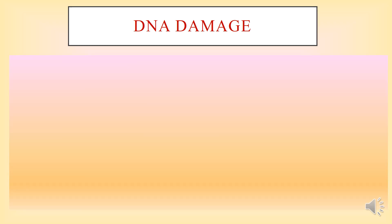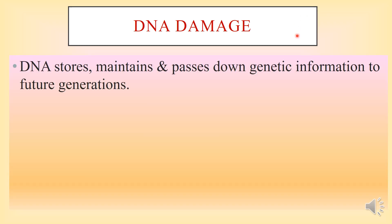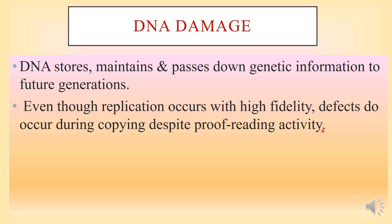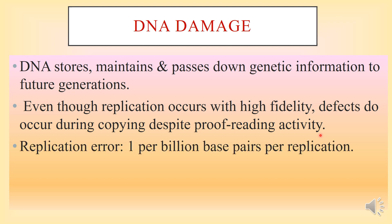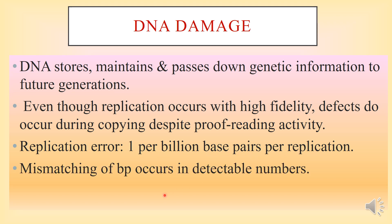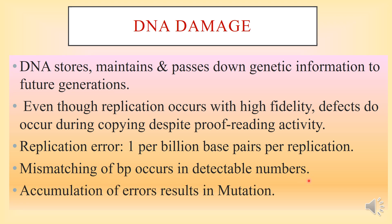So what is DNA damage? DNA stores, maintains, and passes down genetic information to future generations. Even though replication occurs with high fidelity, defects do occur during copying. Despite proofreading activity, replication errors are around 1 in 1 billion base pairs per replication. The mismatching of base pairs occurs in detectable numbers, and the accumulation of these errors results in mutation.